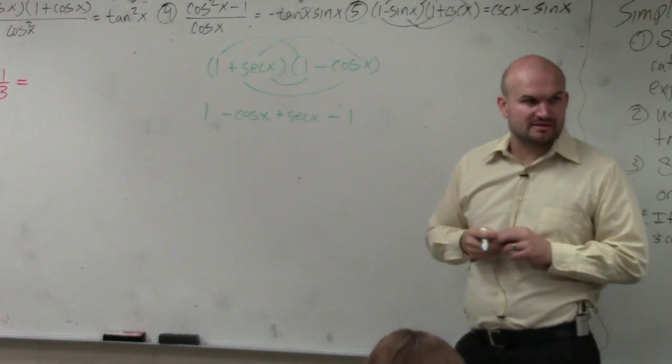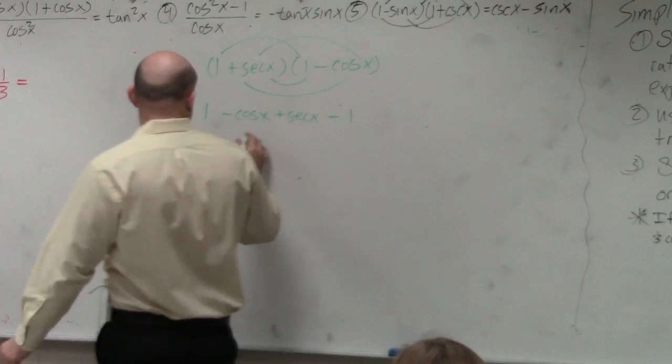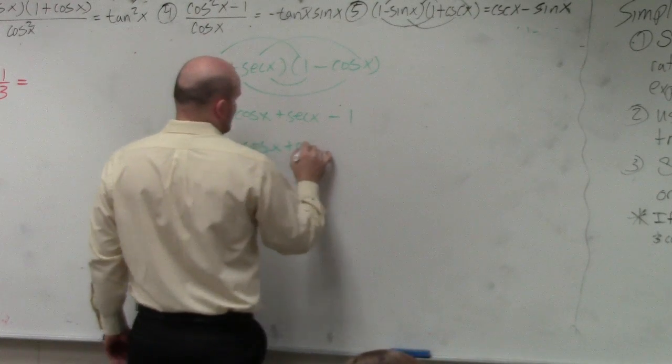Right, secant times negative cosine, if you guys agree with me, is negative 1. 1 plus negative 1 is 0, so I'm left with negative cosine of x plus secant of x.